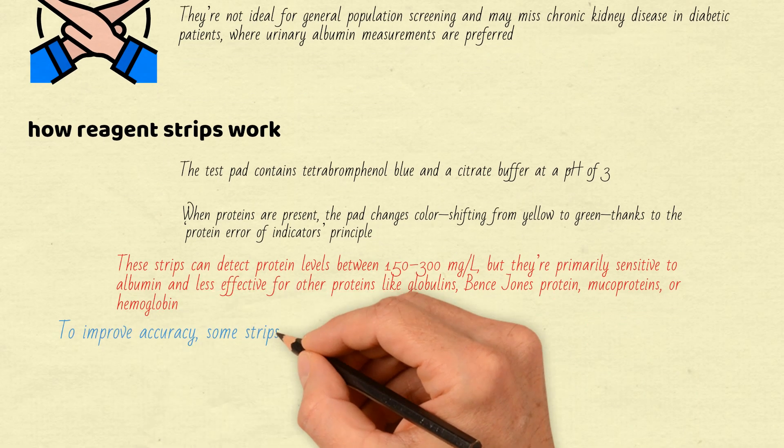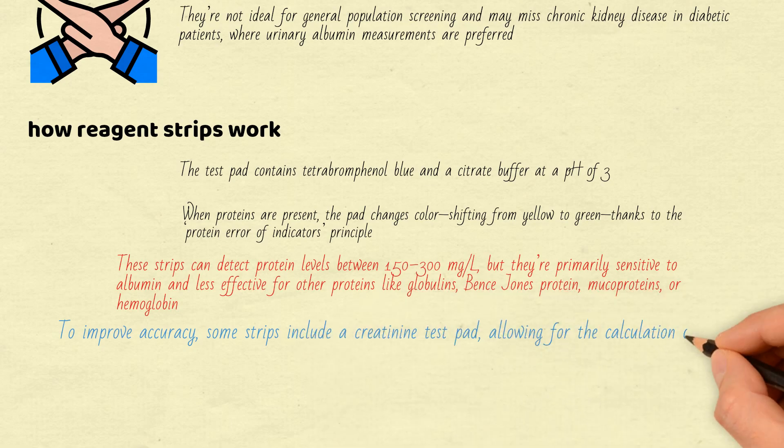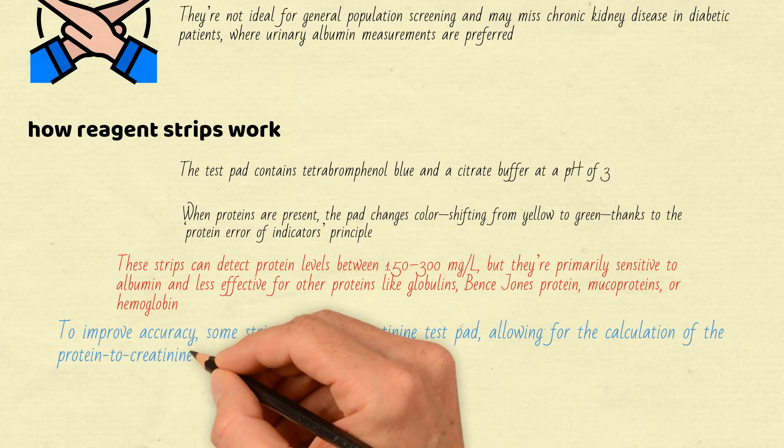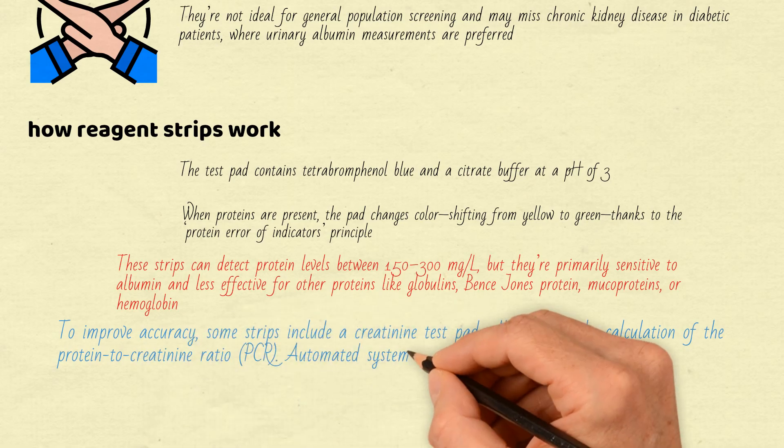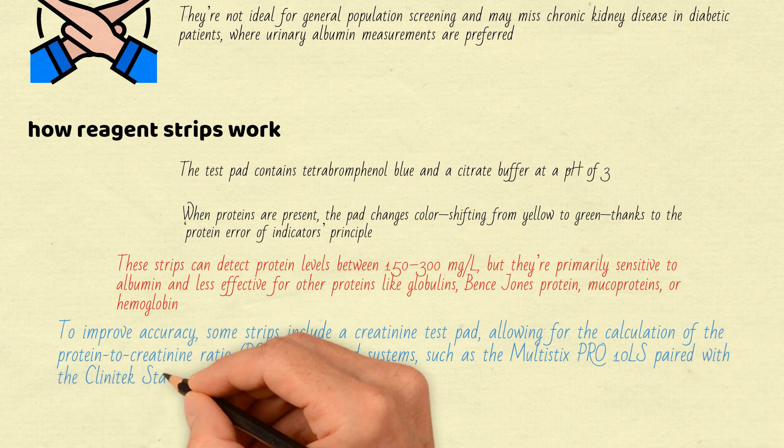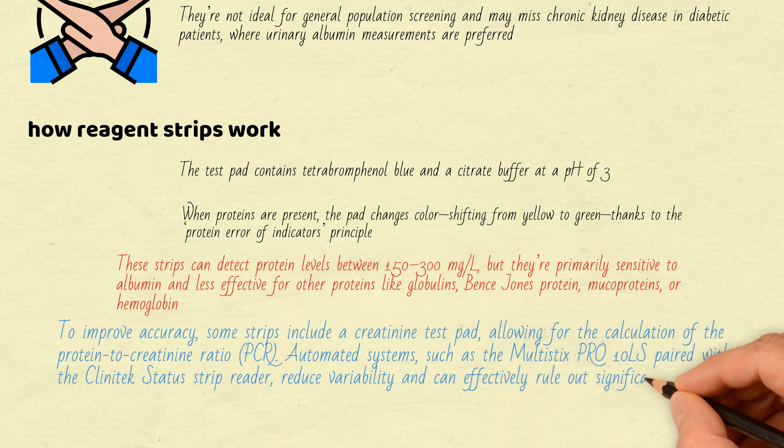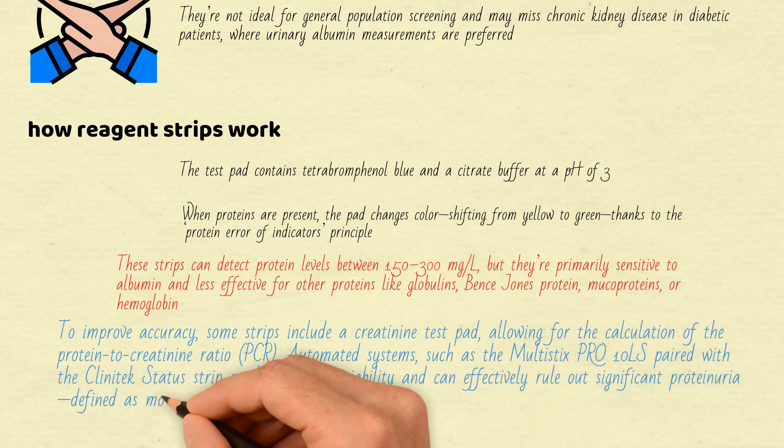To improve accuracy, some strips include a creatinine test pad, allowing for the calculation of the protein-to-creatinine ratio (PCR). Automated systems, such as the Multistix Pro-10 LS paired with the Clinitec Status strip reader, reduce variability and can effectively rule out significant proteinuria, defined as more than 0.3 g per day.